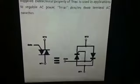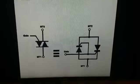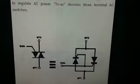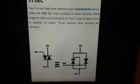TRIAC denotes three-terminal AC switches. There are three terminals: MT1, MT2, and Gate, as shown in the figure.